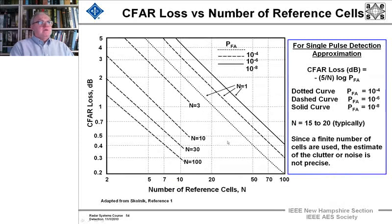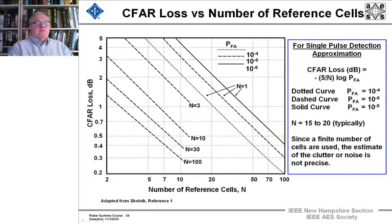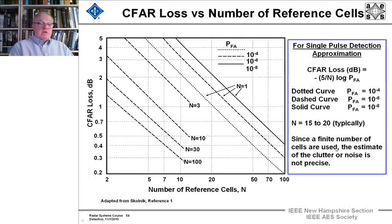This is shown again on a log-log scale as CFAR loss for single-pulse detection approximation, giving you the ability to calculate what that loss is. This approximation is typically good for 15 to 20 or more reference cells. Since a finite number of cells is used, the estimate of noise or clutter is not a precise measurement.